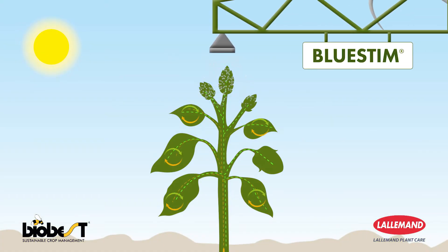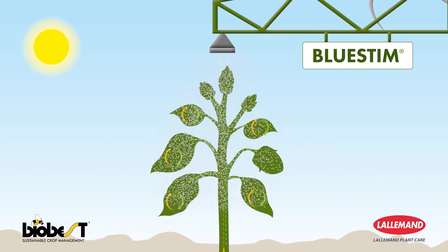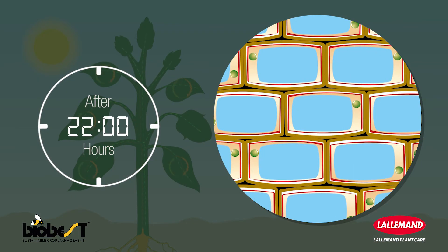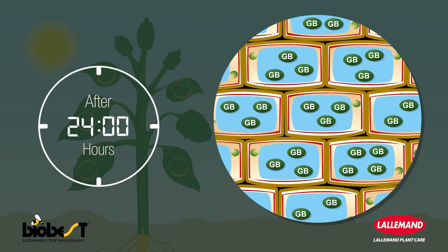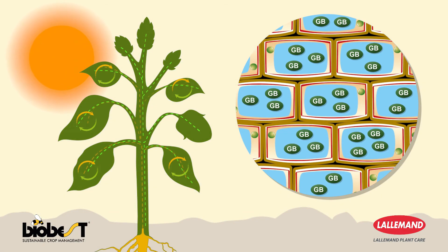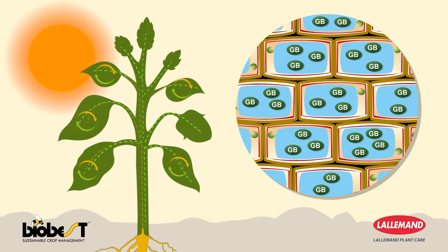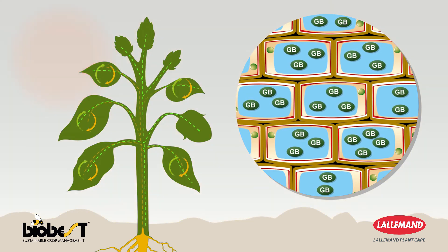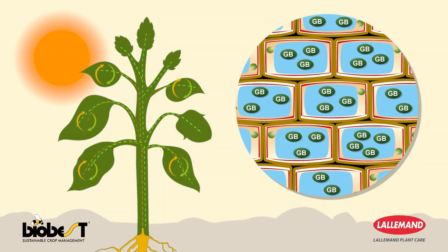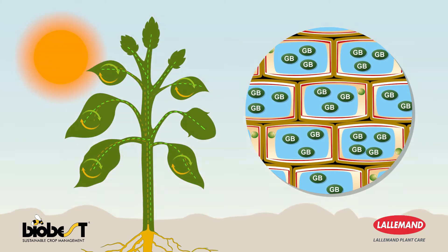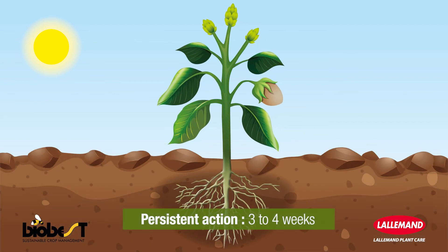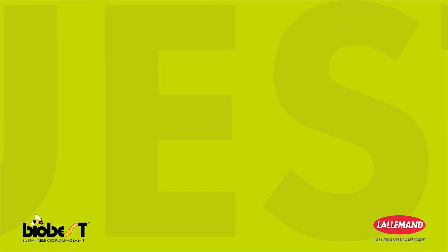When Bluestem is applied as a foliar spray to a plant, its active ingredient, glycine betaine, is translocated into the cells within 24 hours. This osmoprotective compound regulates the osmotic equilibrium of the cells, limiting leakage or entry of water. It favours the fluidity of the cell membrane and thus allows better resistance to mechanical pressures. Bluestem has a persistent effect for about three to four weeks.